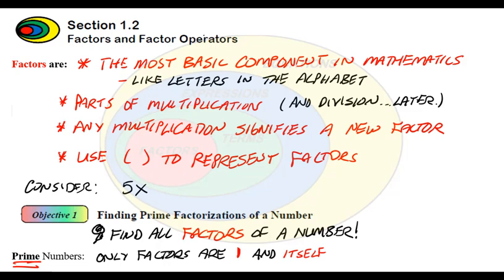But first of all, factors are the most basic component of mathematics. They're basically like the letters in the alphabet. So they make up every word, the words make up sentences. So it's where we start.